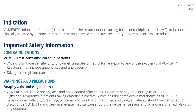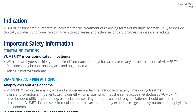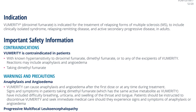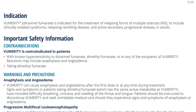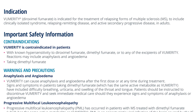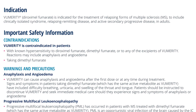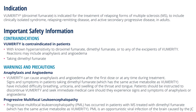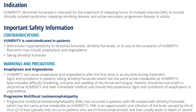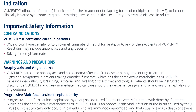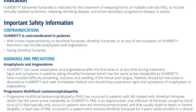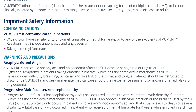Warnings and precautions — Anaphylaxis and angioedema: Vumerity can cause anaphylaxis and angioedema after the first dose or at any time during treatment. Signs and symptoms in patients taking dimethyl fumarate, which has the same active metabolite as Vumerity, have included difficulty breathing, urticaria, and swelling of the throat and tongue. Patients should be instructed to discontinue Vumerity and seek immediate medical care should they experience signs and symptoms of anaphylaxis or angioedema.